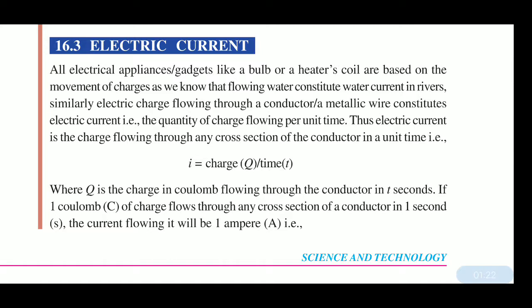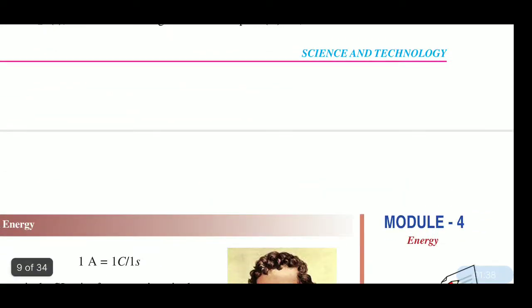If one coulomb of charge flows through any cross-section of a conductor in one second, the current flowing through it will be one ampere. This is the unit of current.